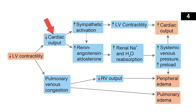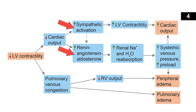Looking at sympathetic activation first: decreased cardiac output activates the sympathetic nervous system. The carotid sinus senses decreased pressure and increases sympathetic outflow, which increases left ventricular contractility — a good thing that raises cardiac output. But this is a short-term fix. The body's goal is to restore cardiac output, yet these compensatory mechanisms also have unintended negative consequences.